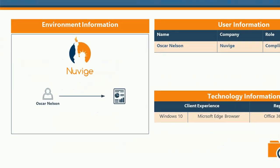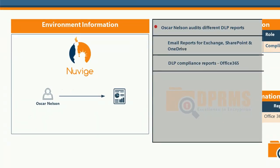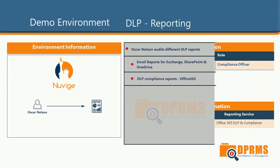In this scenario, Oscar Nelson is a compliance officer and his job is to ensure that the organization is compliant with regulations and industry standards. We will see how DLP reporting can be presented through email, and also how it looks when accessing the compliance reports through the security and compliance section in Office 365.